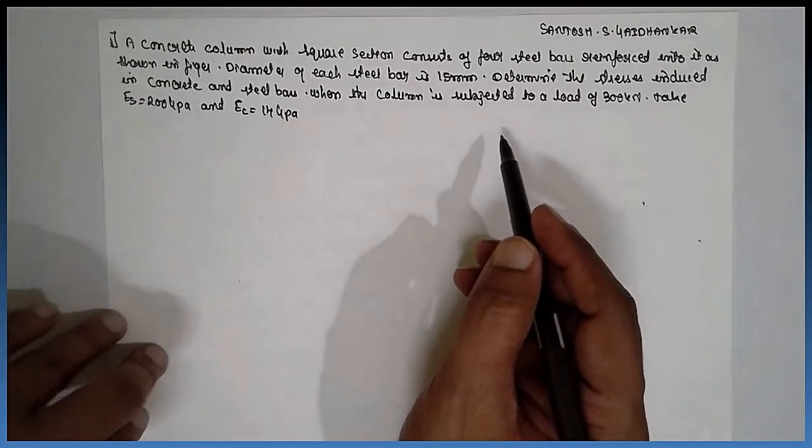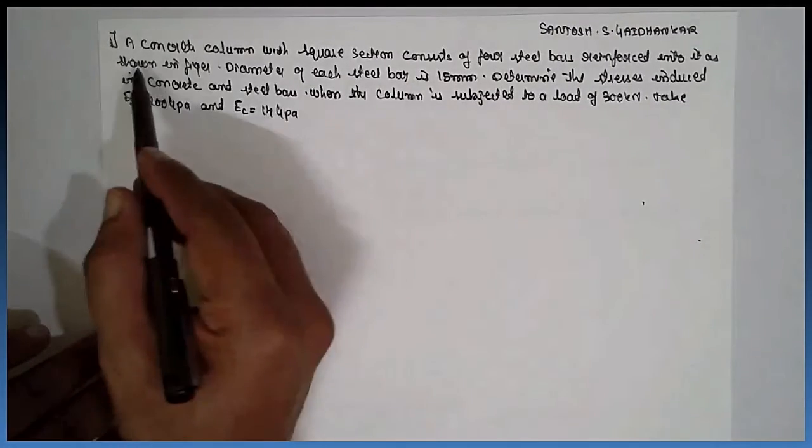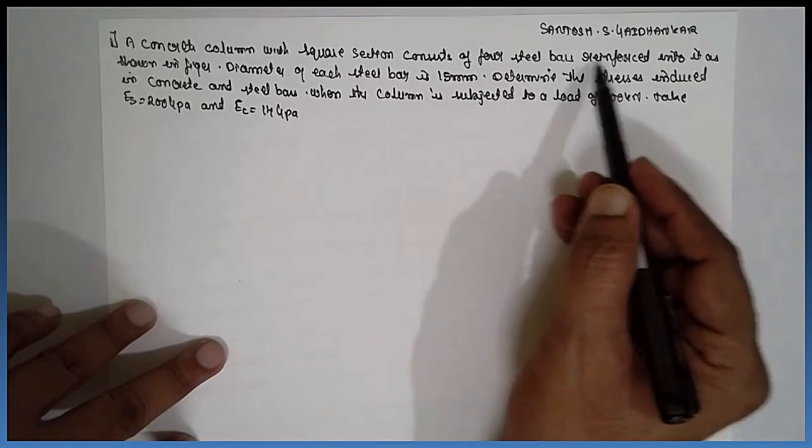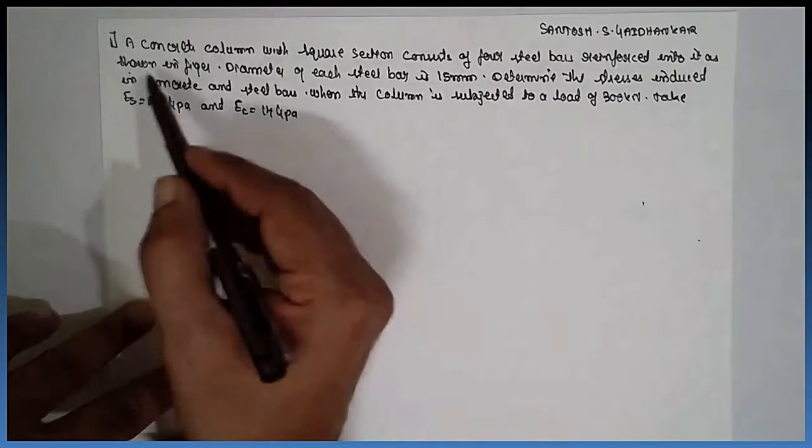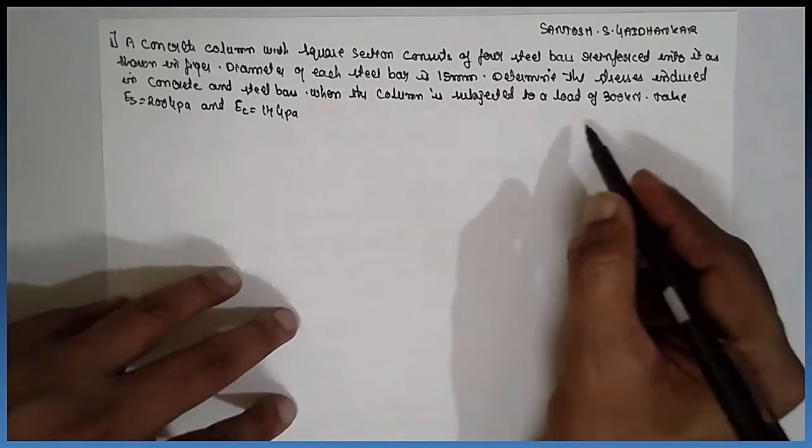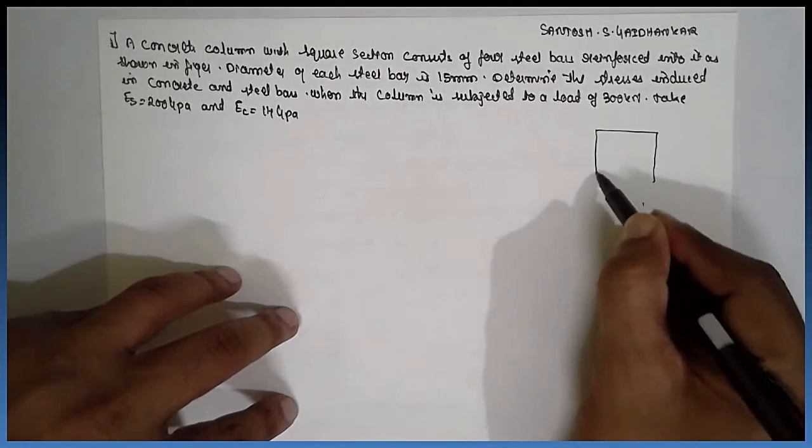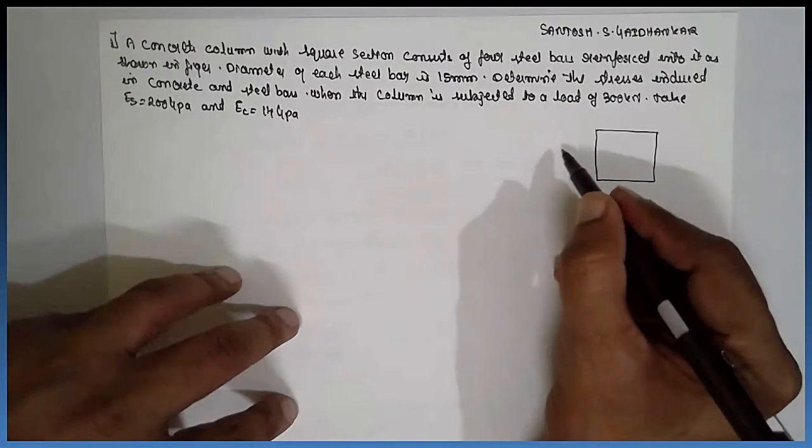Hi, I am Satyash Garamkar. Today I am teaching you Mechanics of Material, Composite Section. A concrete column of square section consisting of four steel bars reinforced into it, as shown in the figure. The figure is given here.